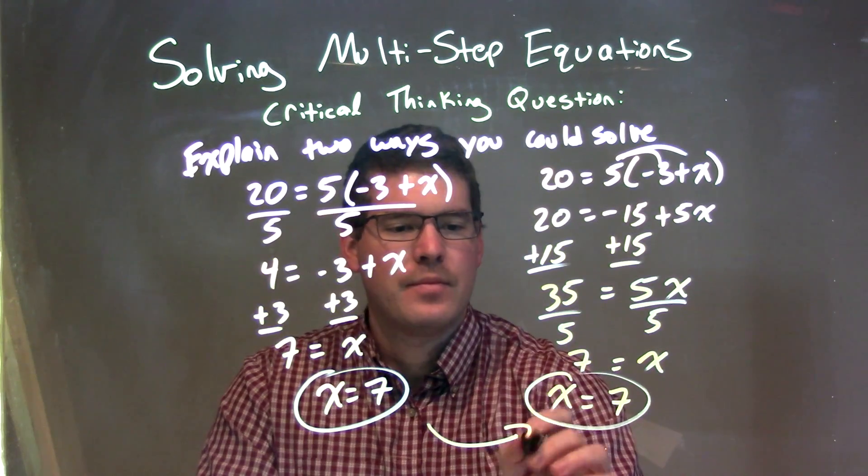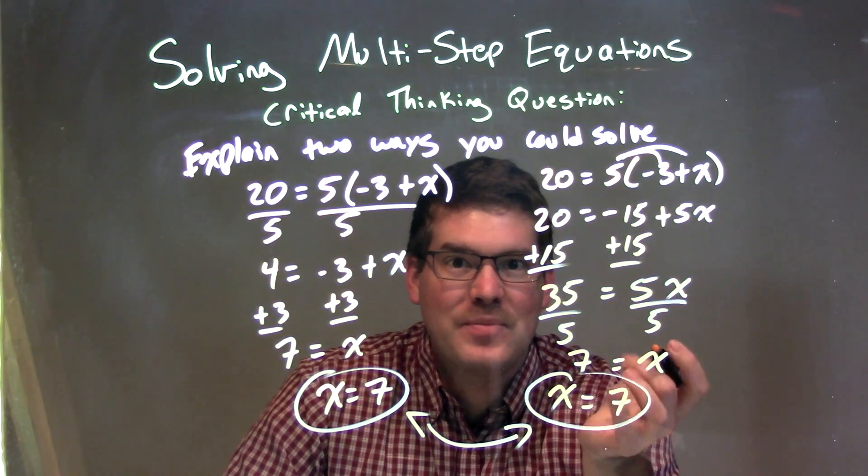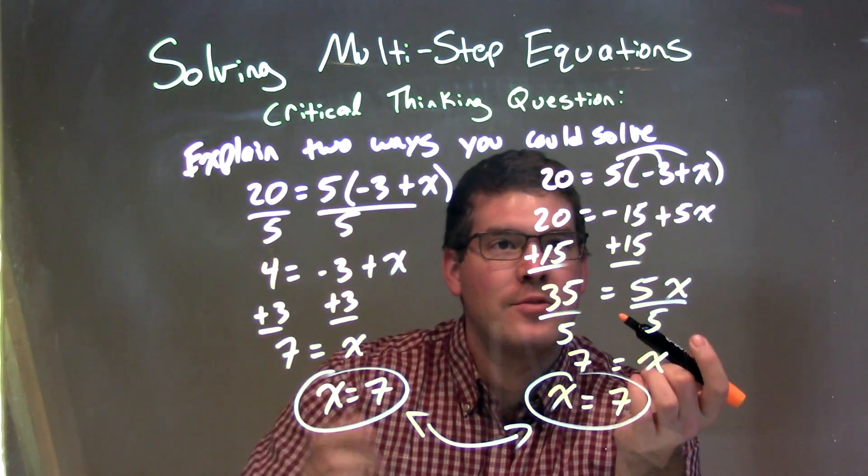These two are the same. They're exactly the same, so we're good. And our final answer is just x = 7 here, right? But we solved it two different ways, right?